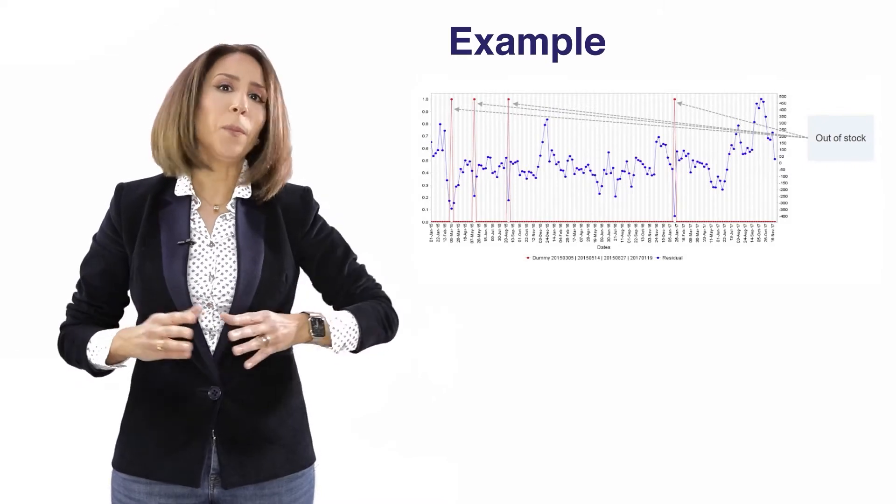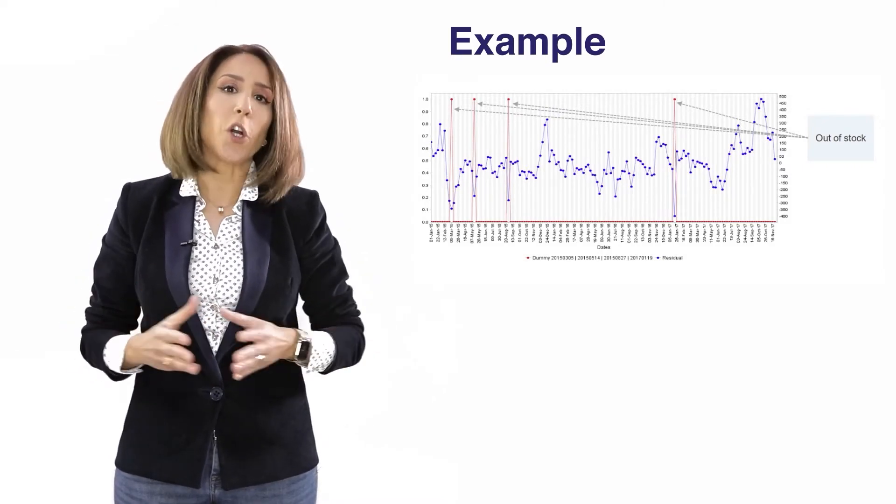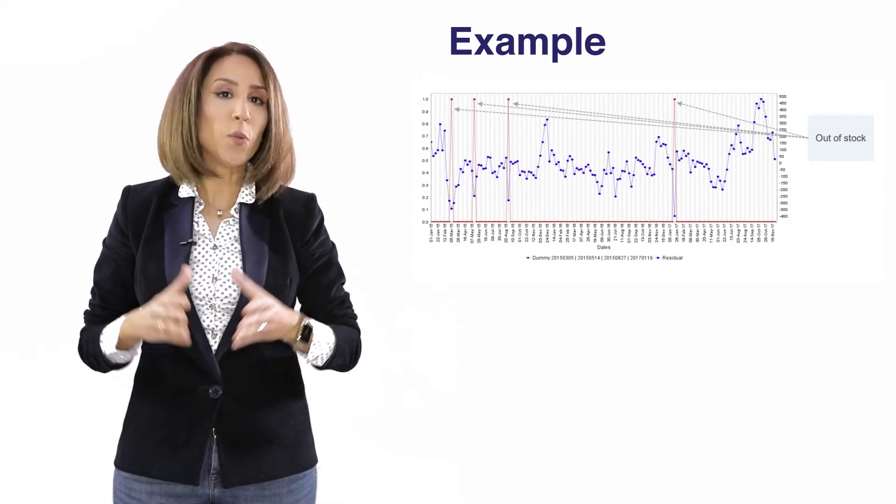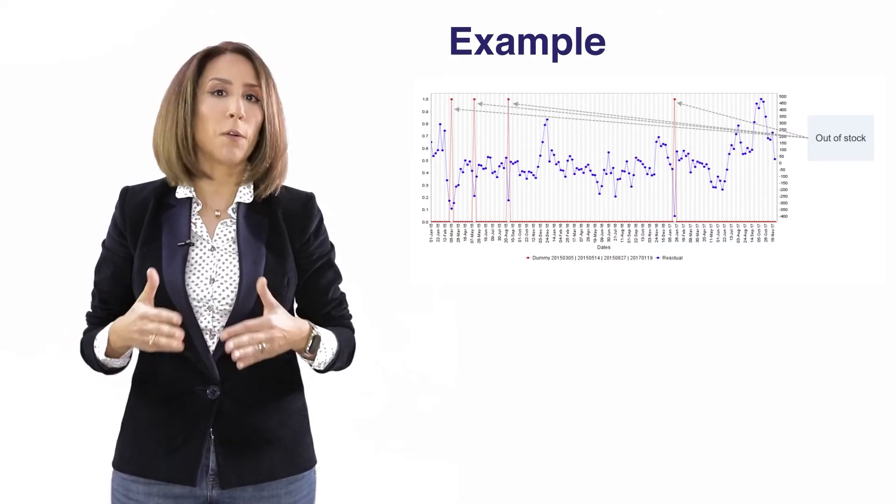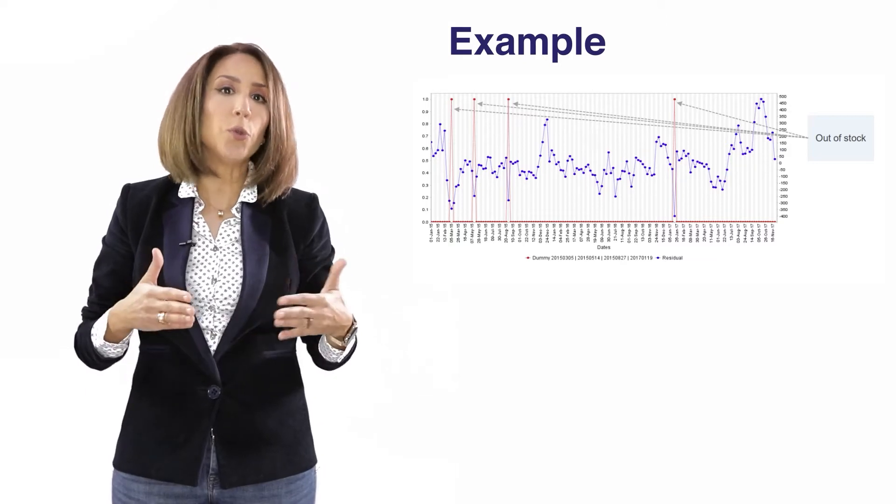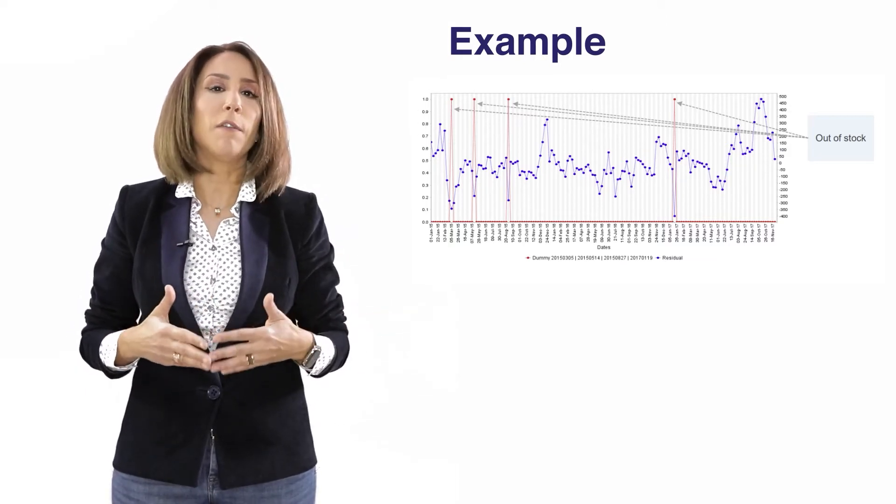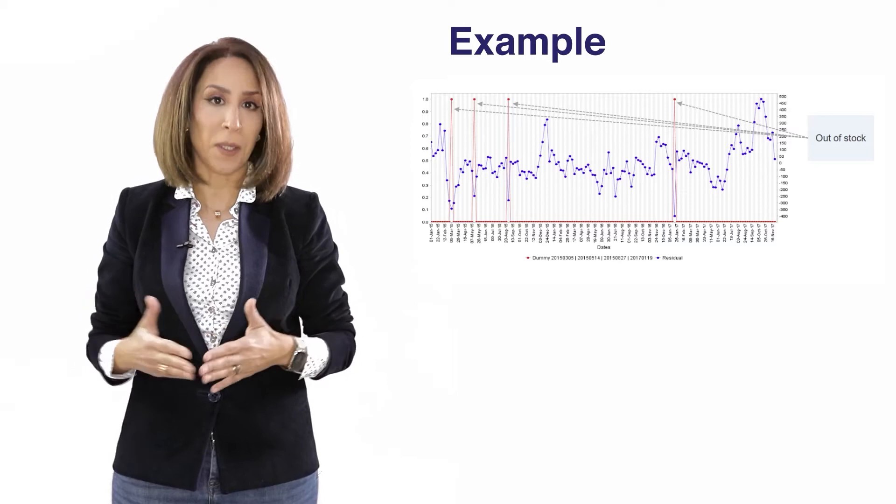For example, the product went out of stock for four periods and we know exactly when this happened. So what we ended up doing is we have created a series of four dummies in order to model the impact of being out of stock during these four periods.